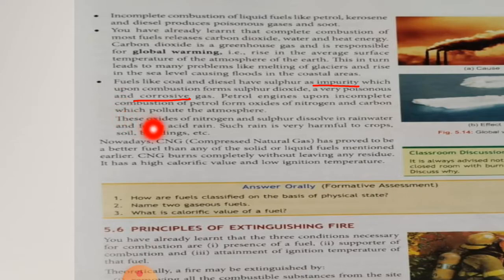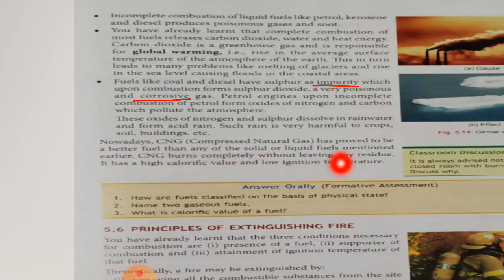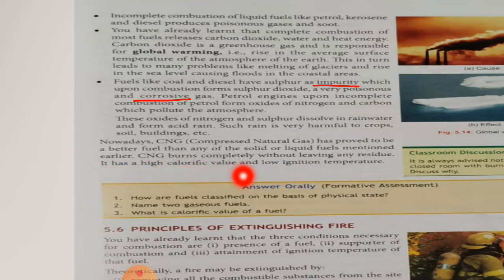Nowadays, CNG — compressed natural gas, full form of CNG is compressed natural gas — has proved to be a better fuel than any of the solid or liquid fuels mentioned earlier. CNG burns completely without leaving any residue. It has a high calorific value and low ignition temperature. Of all the fuels mentioned so far in this chapter, CNG is considered the best fuel, as it has very high calorific value and is a pollution-free gas.